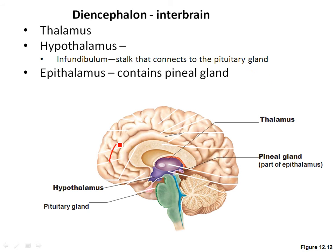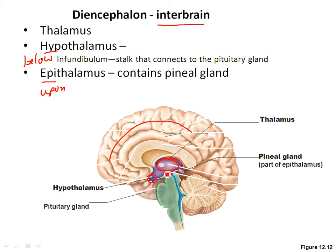We've talked about the cerebrum; now we're going to talk about the interbrain, also known as the diencephalon. There are three main sections: the thalamus, the hypothalamus, and the epithalamus. Since hypo means below and epi means upon, if you know where the thalamus is, you can figure out where the other two are. Associated with the hypothalamus is a stalk called the infundibulum, which connects to the pituitary gland. The epithalamus connects to the pineal gland.